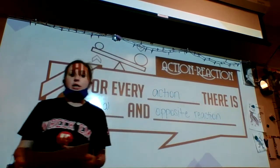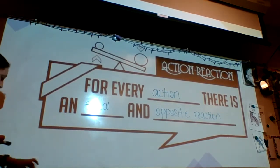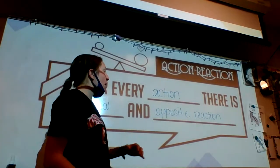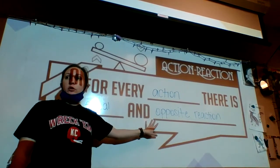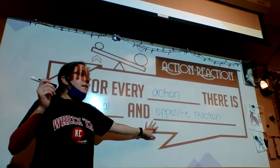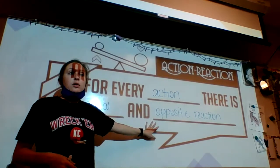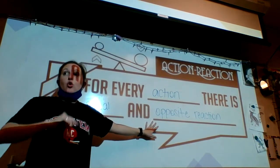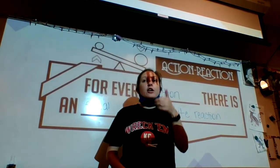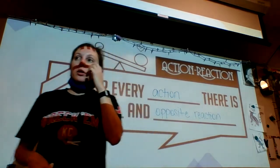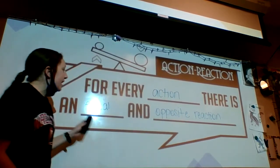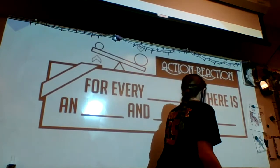For every action, there is an equal and opposite reaction. We just watched a video — you sitting in your chair, there's gravity acting upon you. If there wasn't an equal and opposite reaction, you would fall through the floor because gravity would be the only force affecting you. The force that's equal and opposite to gravity is called normal force. Because of that equal and opposite normal force of the floor and the chair pushing back on you, you're sitting still instead of falling through the floor. This is Newton's Third Law in a nutshell.